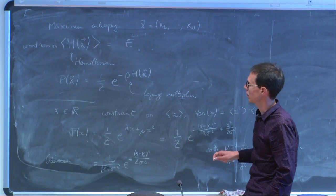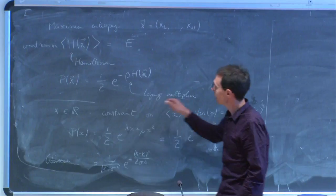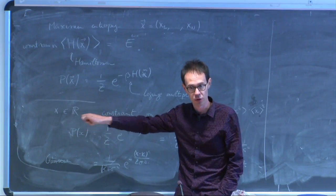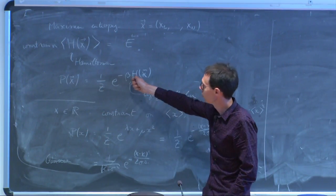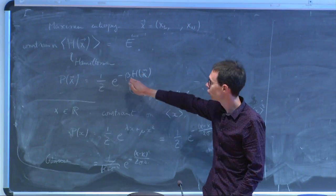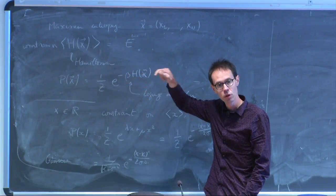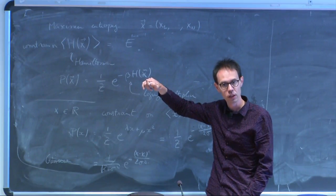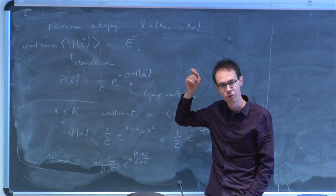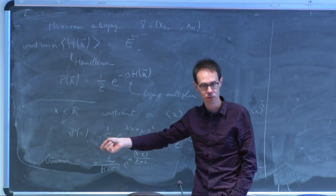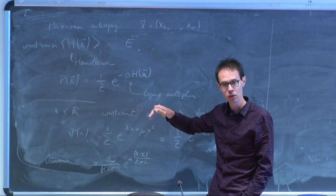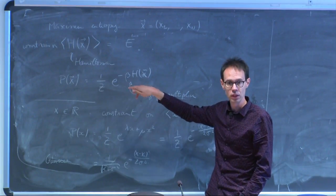The idea is that you have Lagrange multipliers that are conjugates to the value of which you want to fix the average. When you do this exercise, if you want to find a distribution consistent with a given value of the mean energy, you need to tune the temperature so that you reach that desired mean energy. It's an inverse problem — usually you fix the temperature and calculate the mean energy, but here we want to do the opposite: we fix the mean energy and back out the temperature.